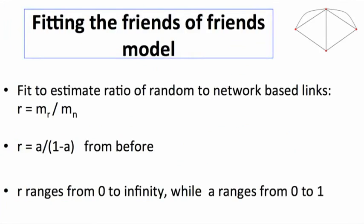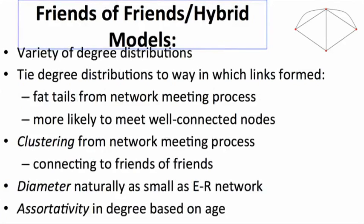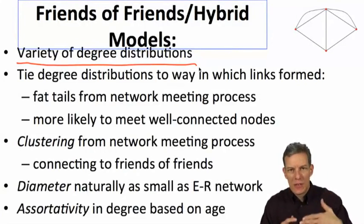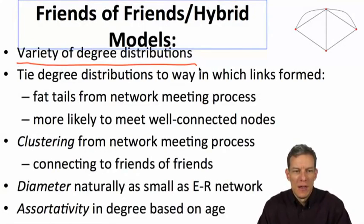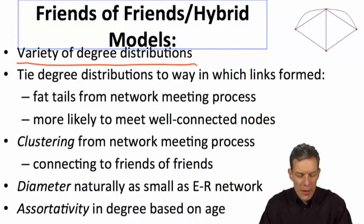One other thing in terms of fitting this kind of model to data. There are other things that the friends of friends model allows us to do. It does give us a variety of degree distributions so we can span different degree distributions. And it ties the degree distribution to the way that links were formed in terms of having some meeting friends of friends.